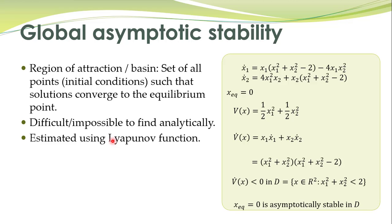For example, we had studied this example system — a nonlinear system given by these differential equations. The equilibrium point for this system is at origin. We had taken this Lyapunov function and computed its derivative, which came out to be negative definite in this region. So if the initial conditions are in this domain, then the trajectories will converge to the equilibrium point at origin. This region is the domain of attraction.